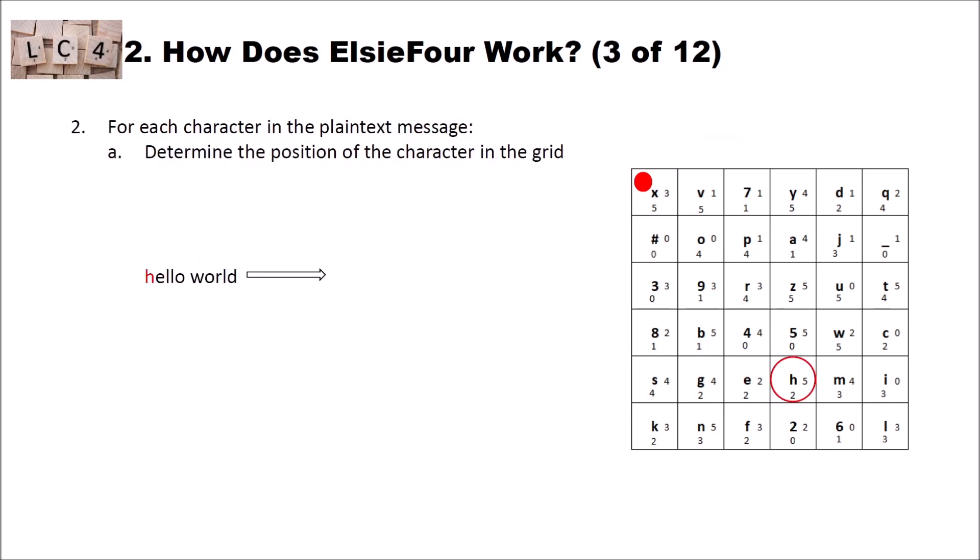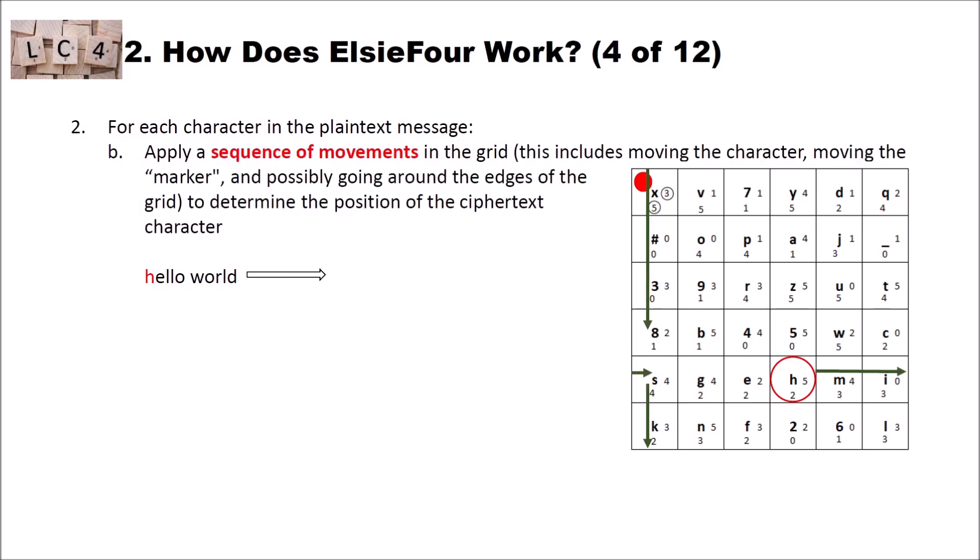Now, for each character in the plaintext message, first we determine the position of the character in the grid. Let's for instance encrypt hello world. So the first character here is the h. We search for the h in the current grid. The h is here, marked with a red circle. Then we apply a sequence of movements in the grid. This includes moving the character, moving the marker, and possibly going around the edges of the grid, to determine the position of the ciphertext character.